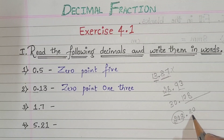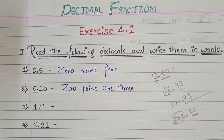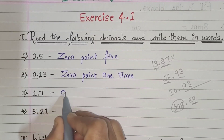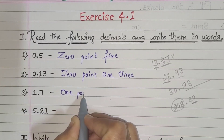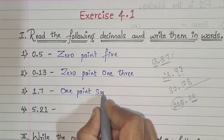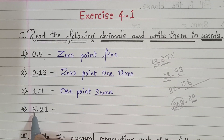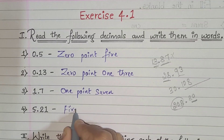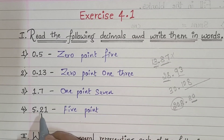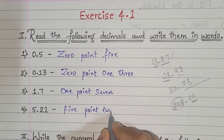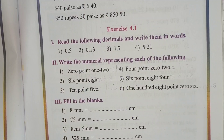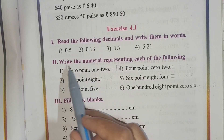For 1.7: write 'one point seven.' For 5.21: write 'five point two one.' Got it? Yes.